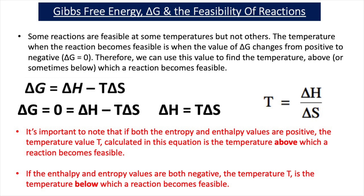Delta G is equal to delta H minus T delta S. If we set delta G equal to zero, then zero equals delta H minus T delta S, which gives us delta H equals T delta S. Rearranging this, we get T equals delta H divided by delta S.